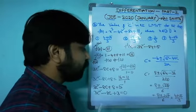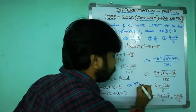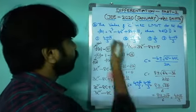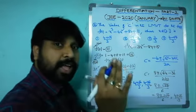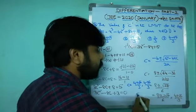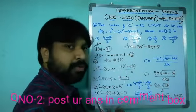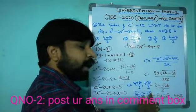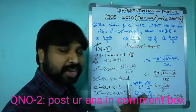There are two values: c = (4 + √7)/3 and c = (4 - √7)/3. According to LMVT, c must belong to the open interval (0,1). Check which value lies between 0 and 1 — only that result is valid. Check and post your answer in the comment box.